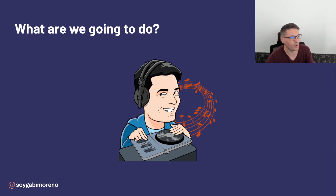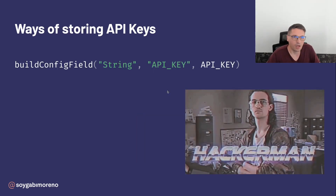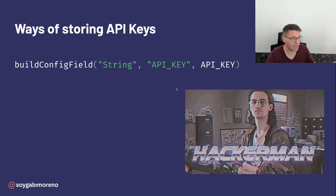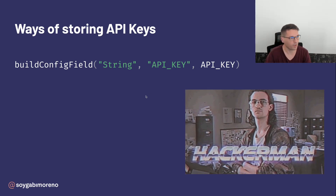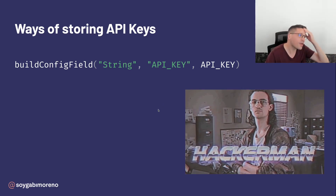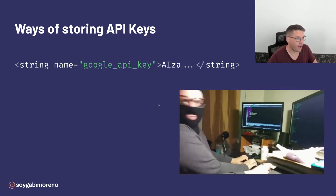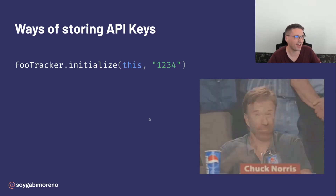Historically we have had several ways of storing API keys. The first one is to use BuildConfig fields in the build.gradle file. You can declare the API keys in a local.properties file to avoid including it in your version control system, but the keys will still be inside the APK. Although you can do it even worse — you can leave them inside the strings.xml.